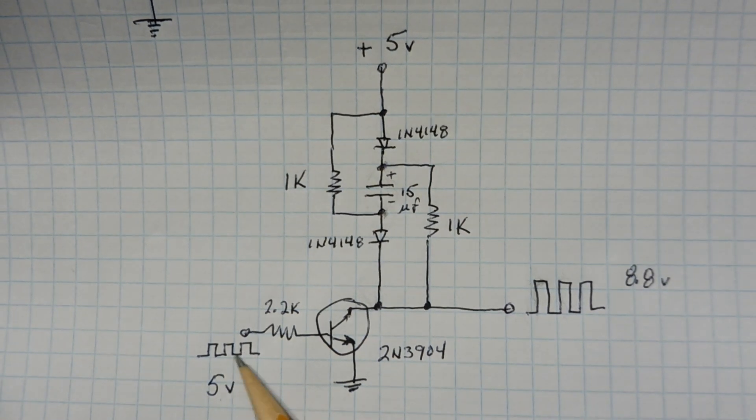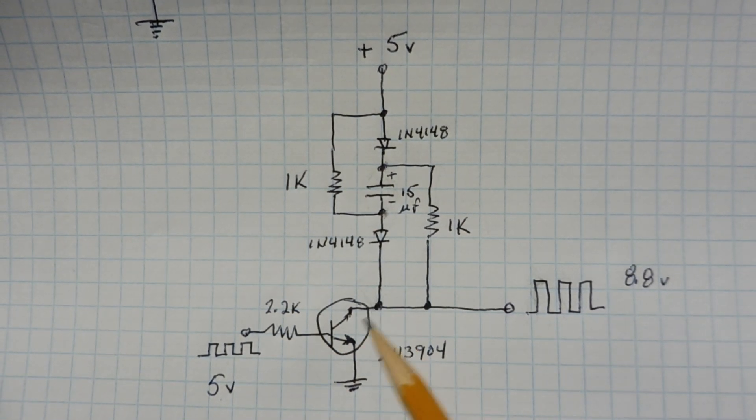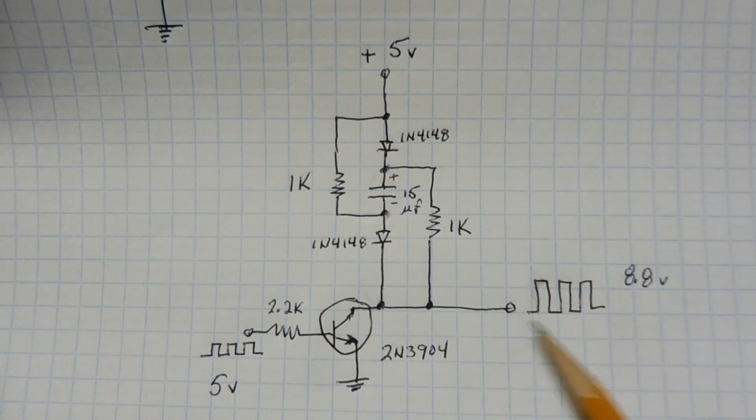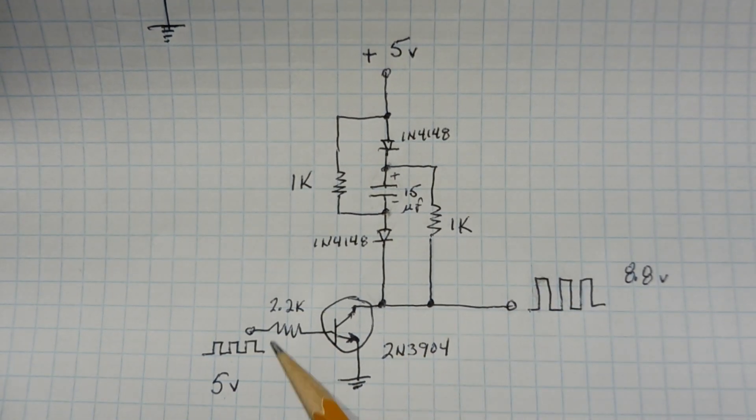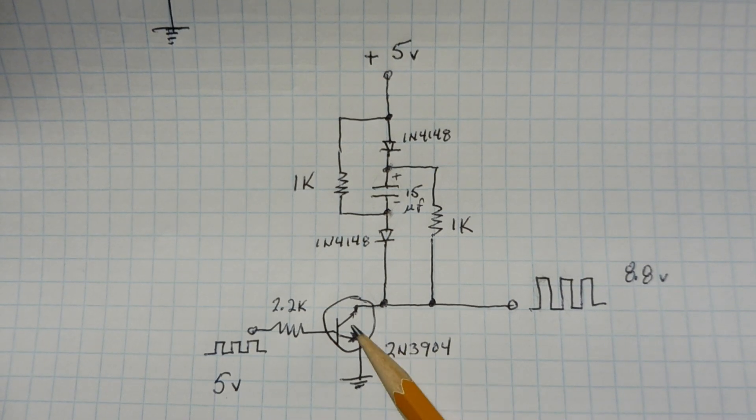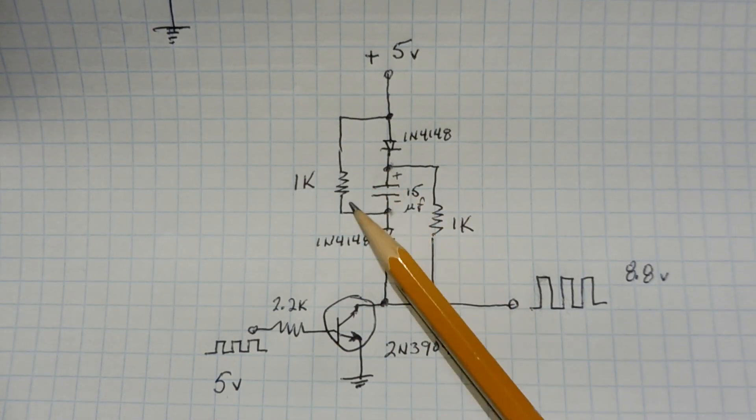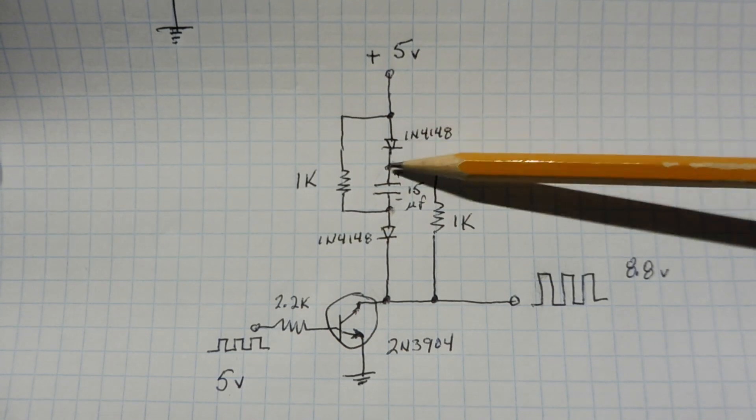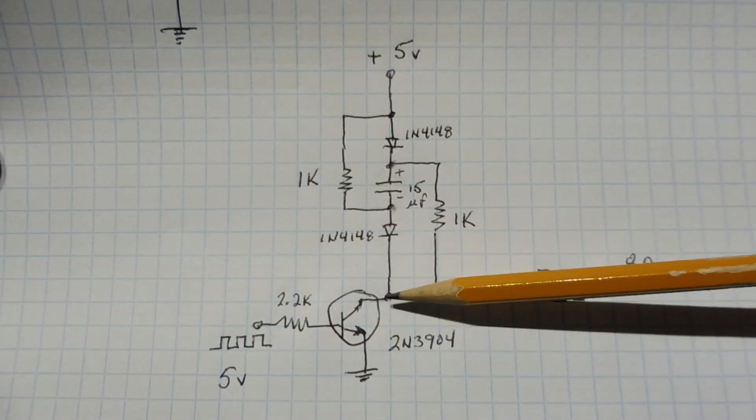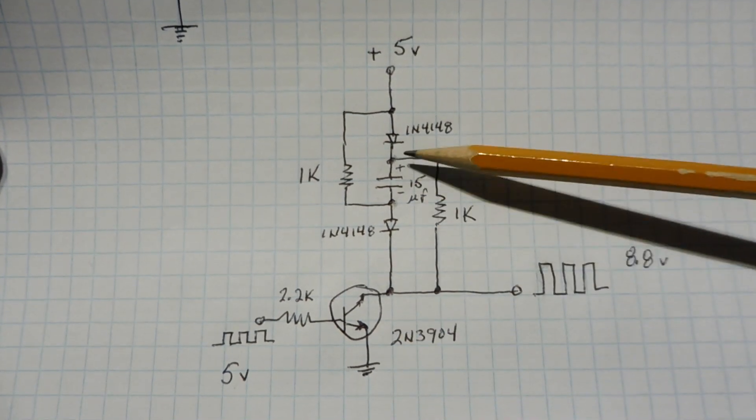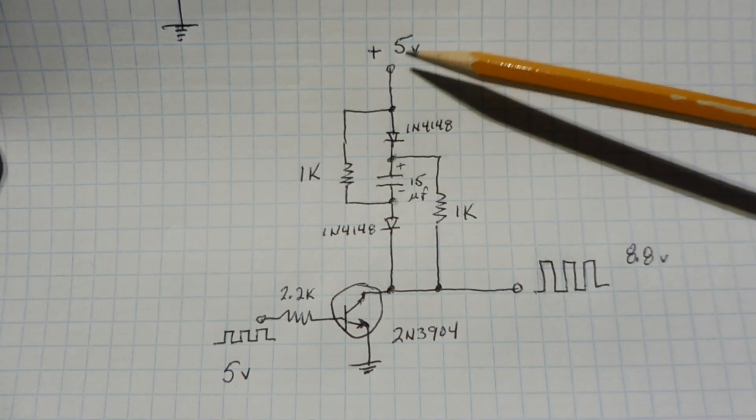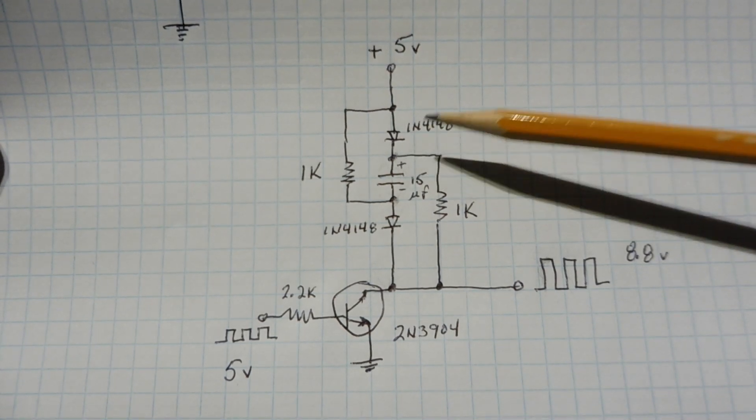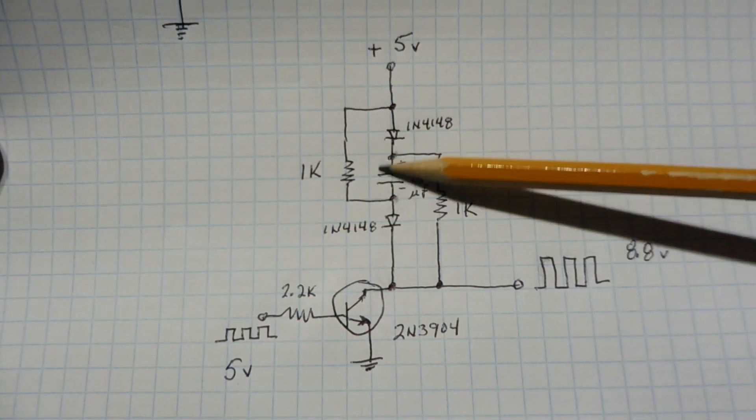So when the clock goes high, it's going to turn on this transistor, the collector will be pulled to ground, and our output will be low. So now we know the output square wave will be the inverted signal from the input. With the transistor on, this capacitor here can charge up. It can charge up from the 5 volt power supply through the first diode, through the capacitor, through the second diode, and through the collector to ground. So this capacitor will charge up to VCC minus 2 diode drops, so it's going to charge up to 3.8 volts.